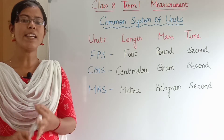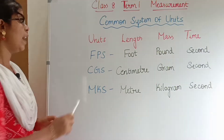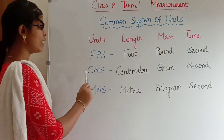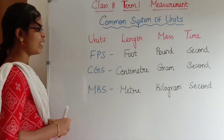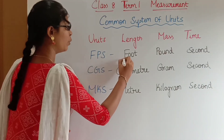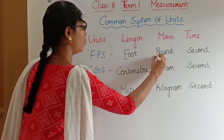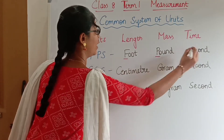There are 3 common systems of units. They are FPS, CGS, and MKS. In FPS, F stands for foot, P stands for pound, and S stands for second.